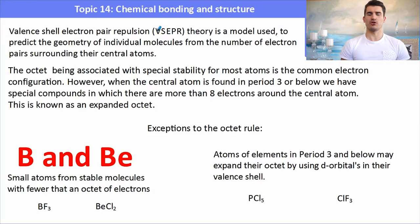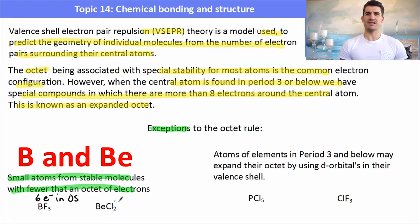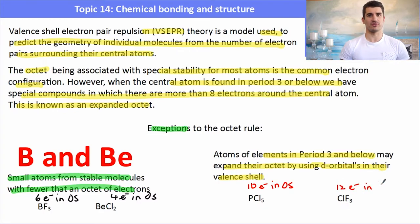VSEPR theory is the model used to predict the geometry of individual molecules from the number of electron pairs surrounding the central atom. The octet rule is a special stable configuration. Elements in period 3 or below can sometimes have more or less electrons in the outer shell. Boron and beryllium are exceptions — they have less than 8 electrons in the outer shell, so they can act as Lewis acids or bases. Atoms in period 3 can also expand their octet: phosphorus in PCl5 has 10 electrons in its outer shell, and chlorine in a CF3 molecule would have 12 electrons in its outer shell.